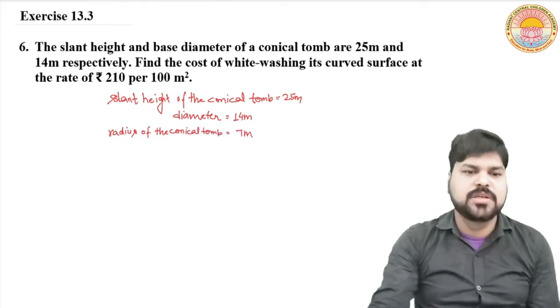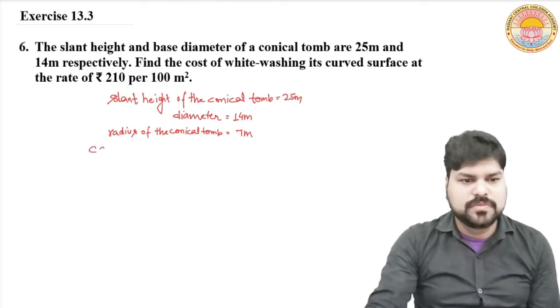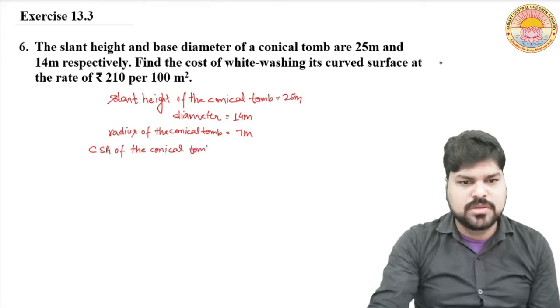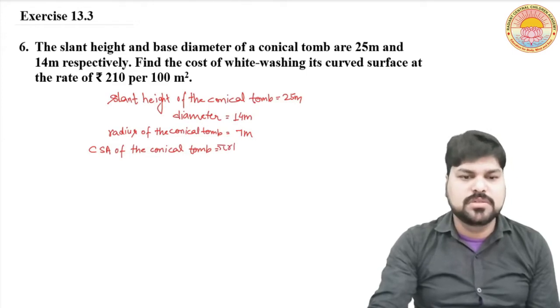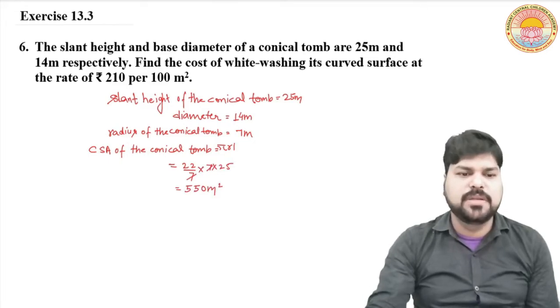Radius 7 meter. Now curved surface area of the conical tomb, CSA equal to pi r l. That gives us 550 meter square.